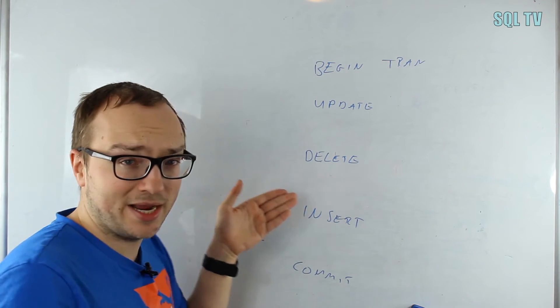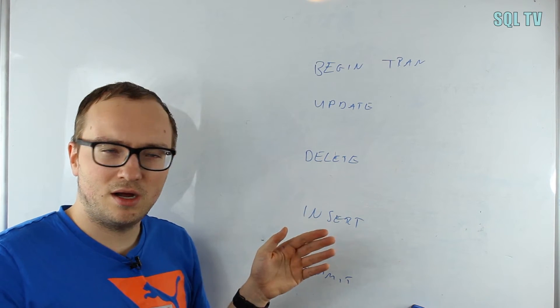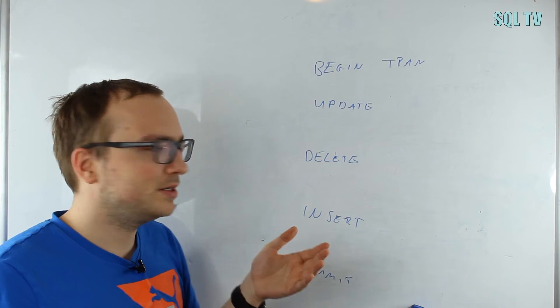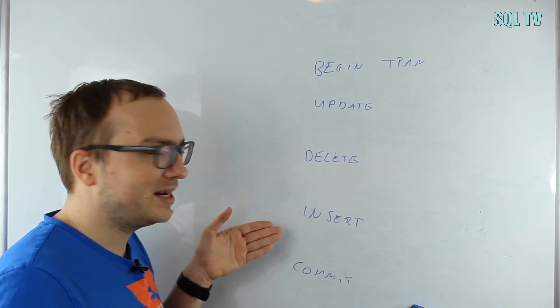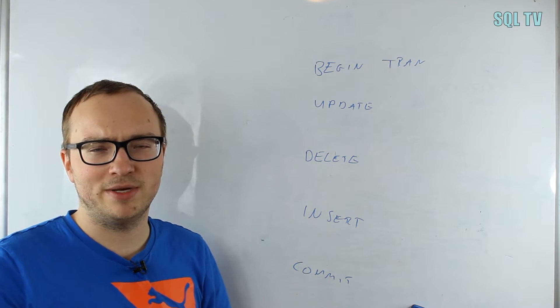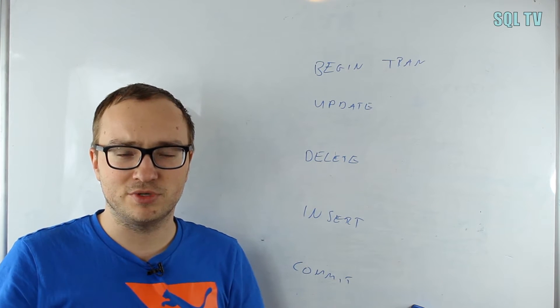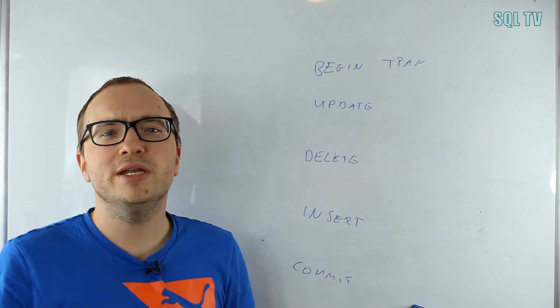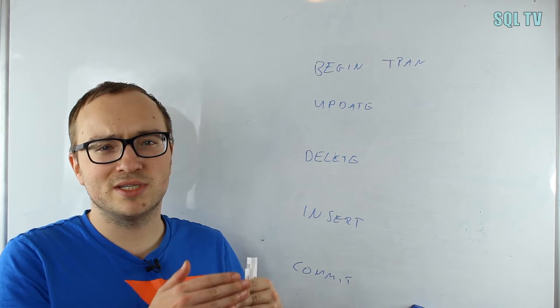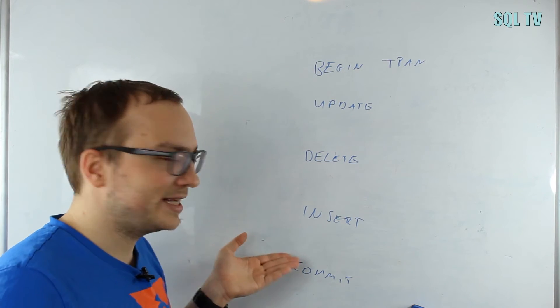Of course you can also have select statements in your transaction. In the default transaction isolation level, the select lock is not held—it's the only lock that is not held until the end of the transaction but only until the end of the statement. This is due to the fact that we don't actually write something in the transaction log because we're just reading.